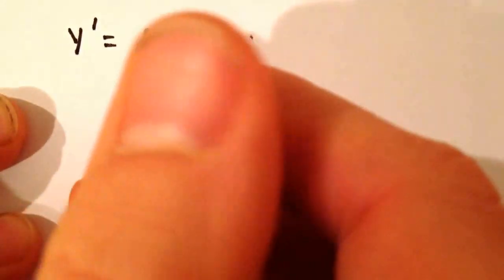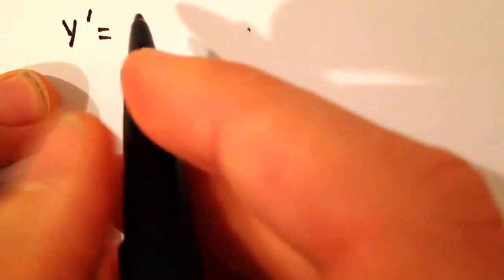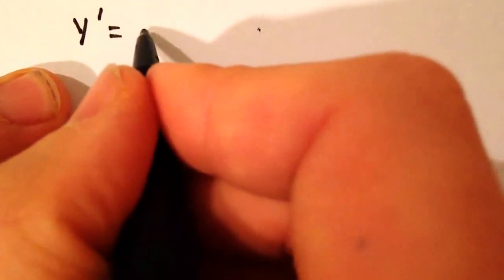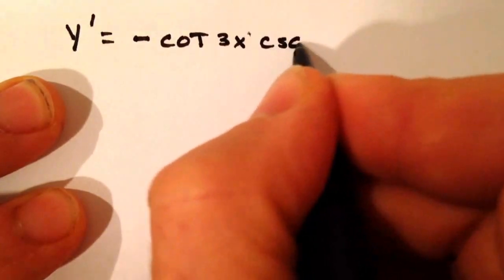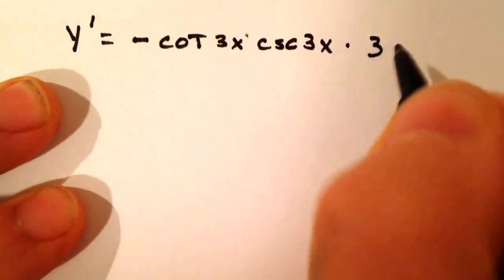First, we've got the cosecant of 3x. So the derivative of cosecant is negative cotangent of 3x times cosecant of 3x times 3.